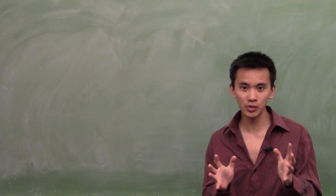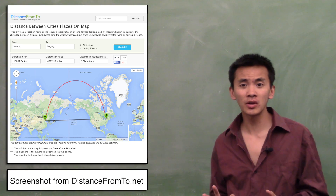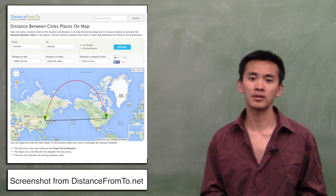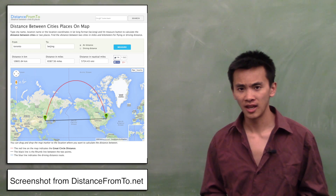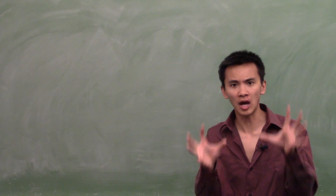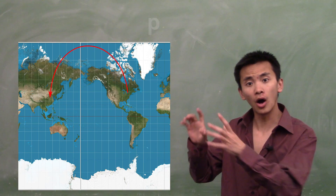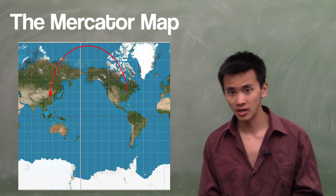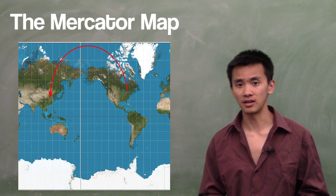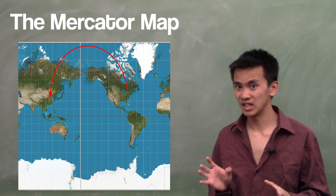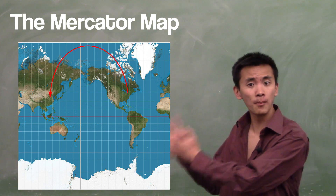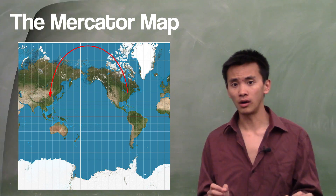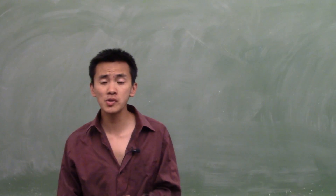The shortest path from Toronto to Beijing actually goes all the way near the North Pole and then back down to Beijing. And this is very surprising and counterintuitive to us because on the Mercator map, this trajectory is not a straight line and it doesn't seem very short. But that's because the Mercator map is, as we've already said, wrong.